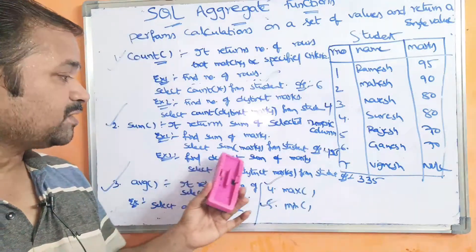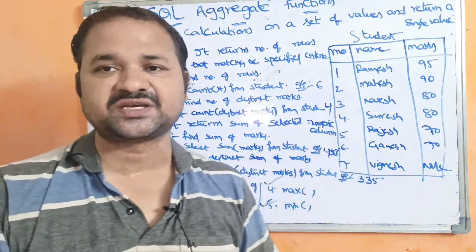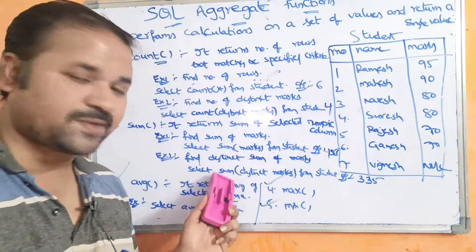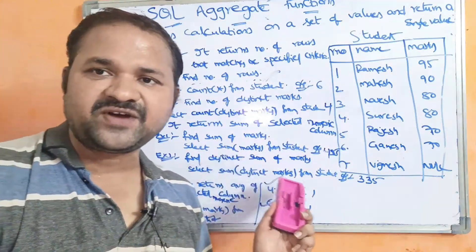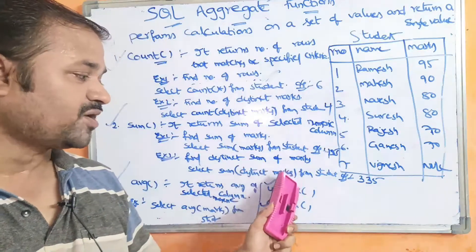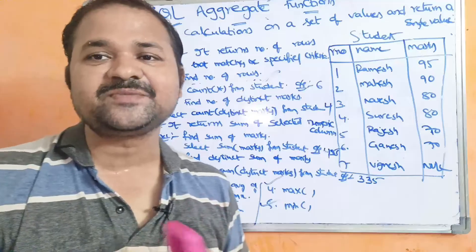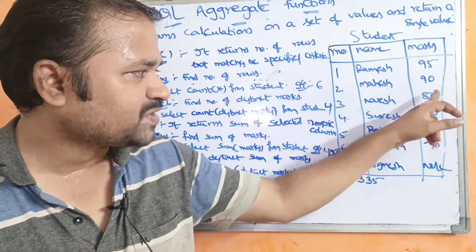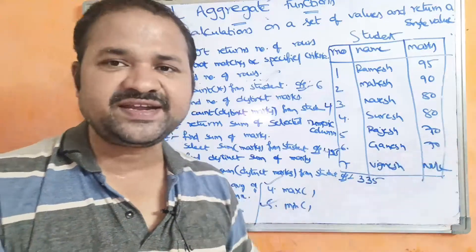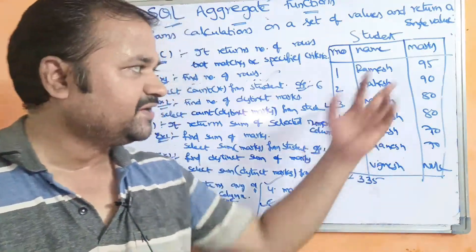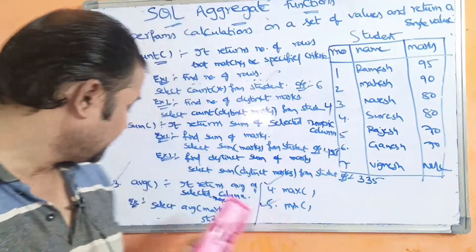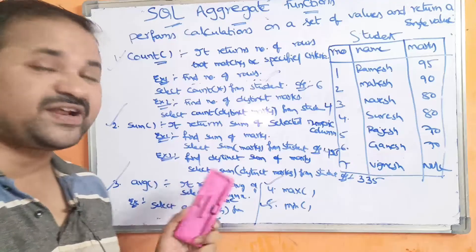Let us see one more example: find the distinct sum of marks. The query is SELECT SUM(DISTINCT marks) FROM student. Distinct means different values only, so out of two 80s only one 80 is considered, and out of two 70s only one 70 is considered. Adding 95, 90, 80, and 70 gives 335 as the output.